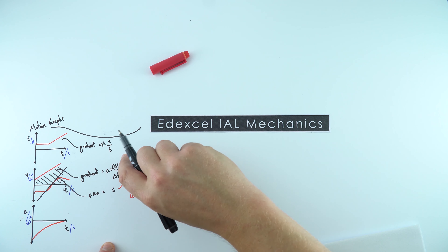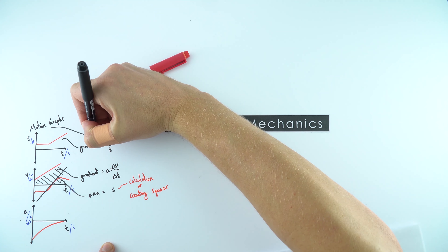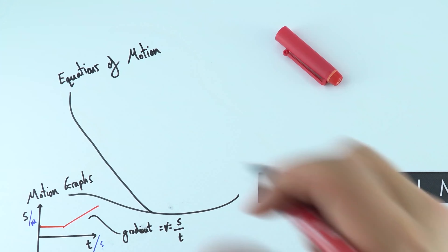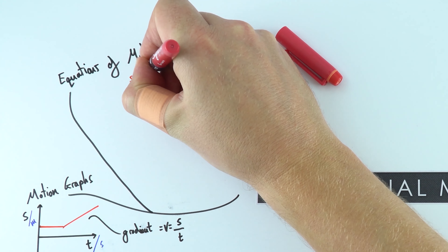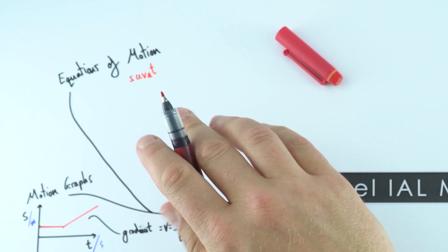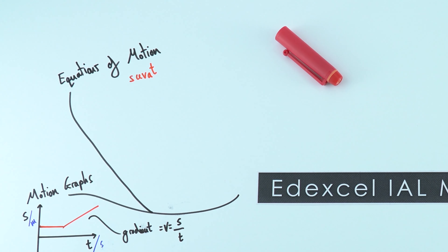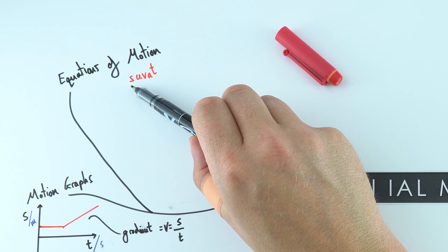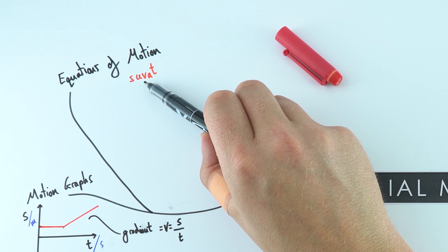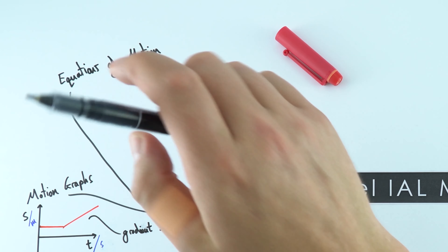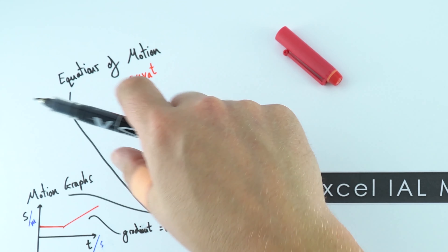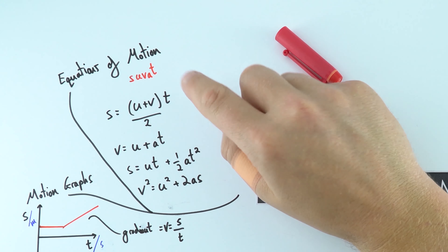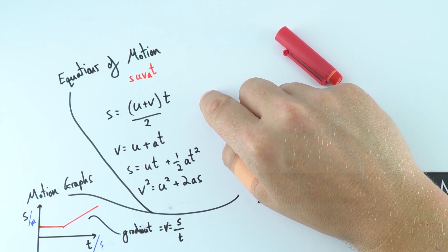These graphs also introduce some equations. We can think about the equations of motion, sometimes known as the SUVAT equations — many of you may have seen these in mathematics. These equations apply when we have constant acceleration, and involve the displacement, the initial and final velocities, and the time taken. There are four main equations used throughout, and they are brilliant for looking at uniform acceleration in one dimension.